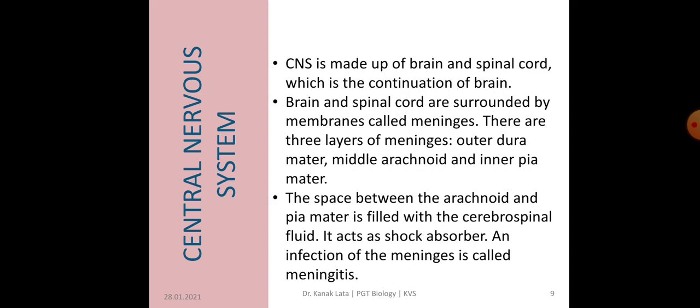Now, let us discuss about central nervous system. Central nervous system consists of brain and spinal cord. Spinal cord is in continuation of brain. Both brain and spinal cord are surrounded by membranes called meninges, having three layers. An outer layer called dura mater, a very thin middle layer called arachnoid, and an inner layer called pia mater. Cerebrospinal fluid is present between the arachnoid and pia mater. This cerebrospinal fluid acts as shock absorber and helps in preventing injury to our brain. An infection in the meninges is called meningitis.